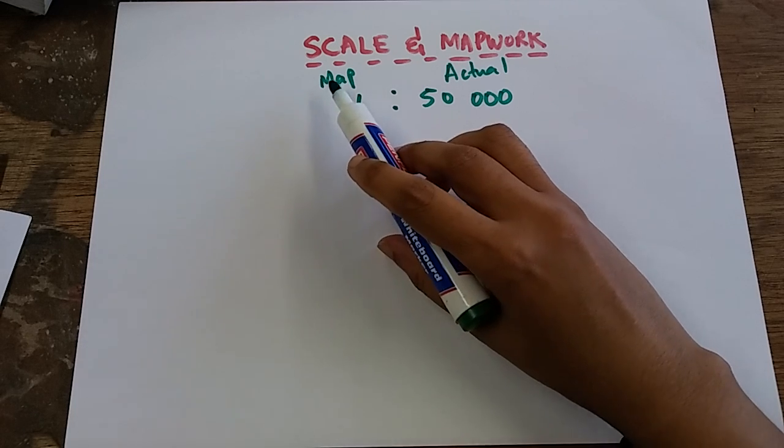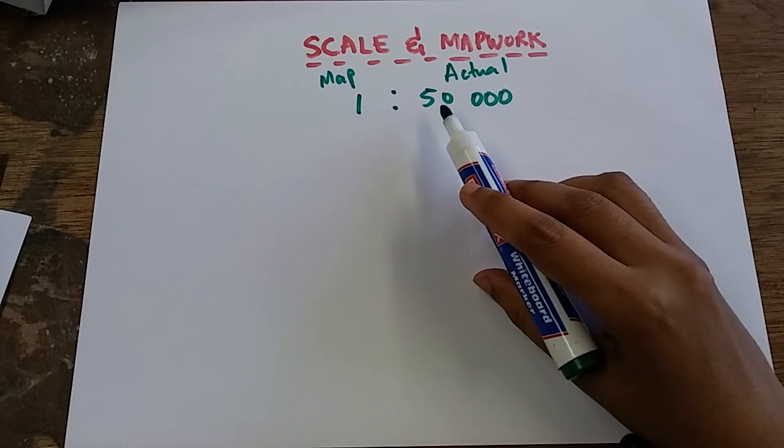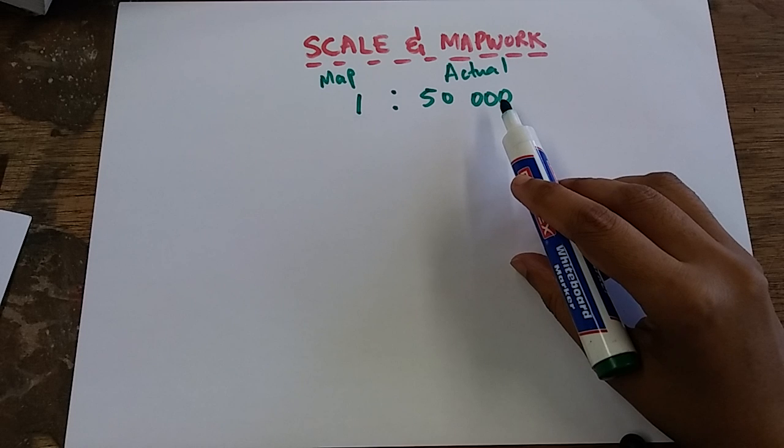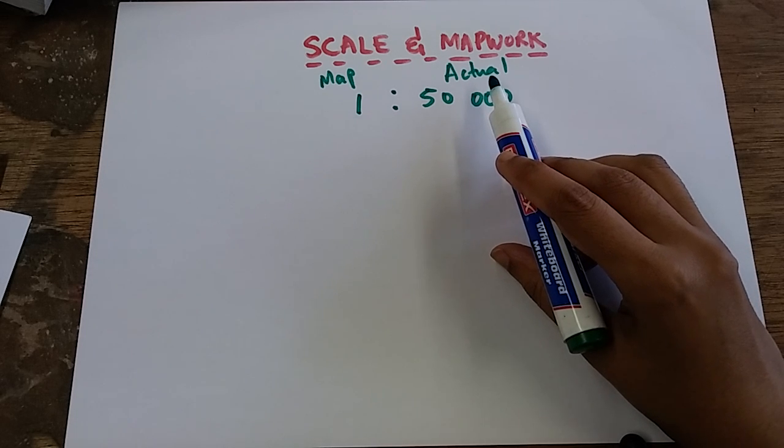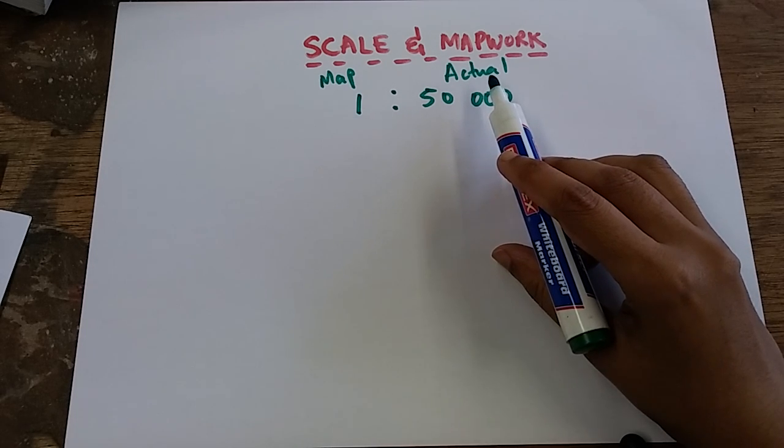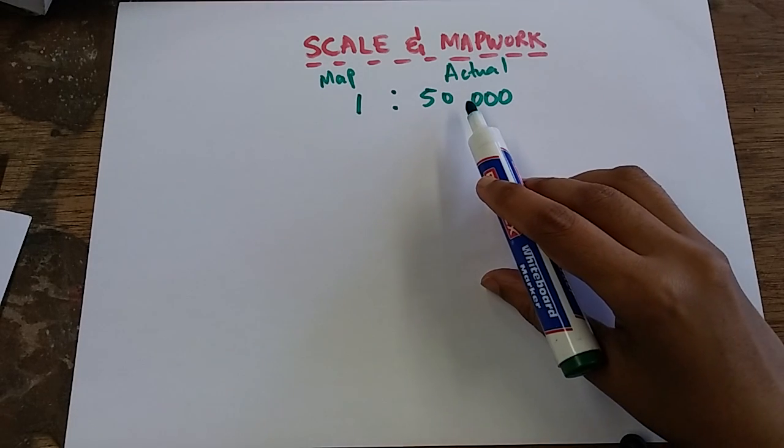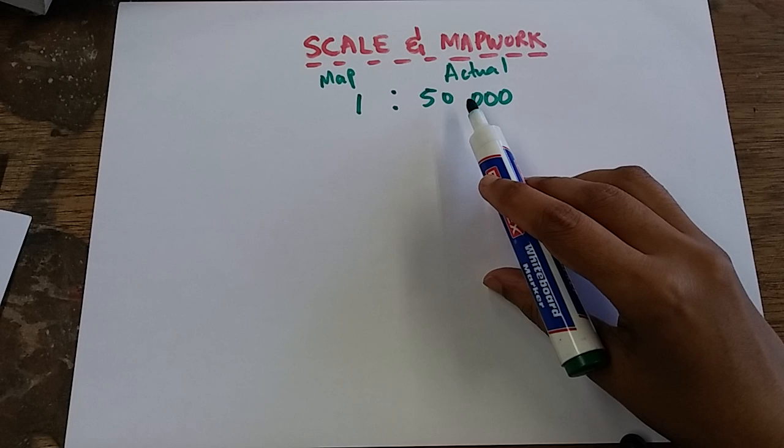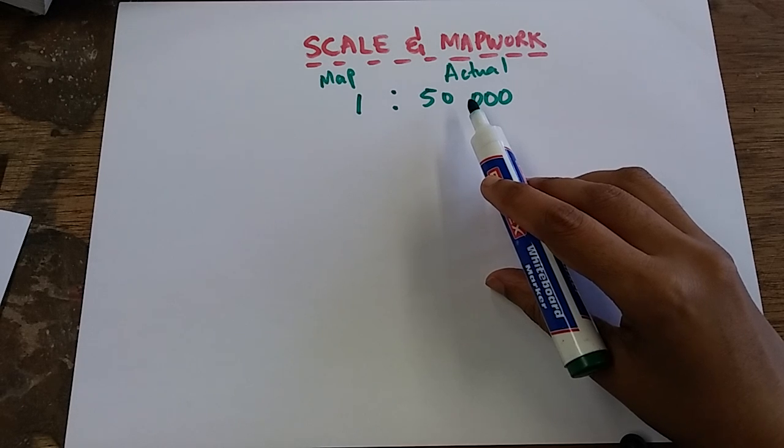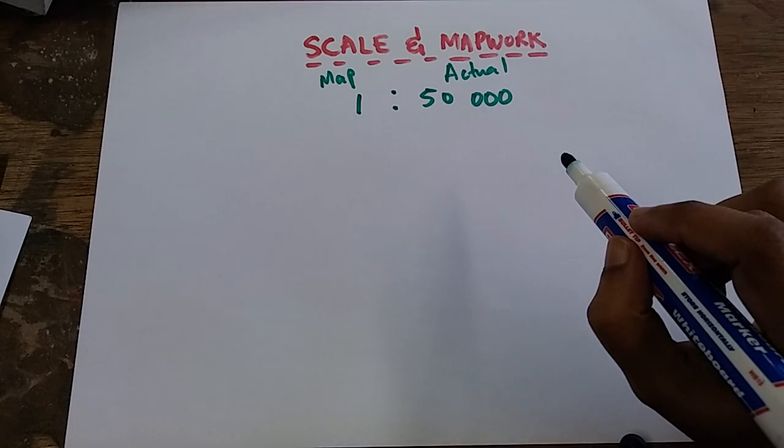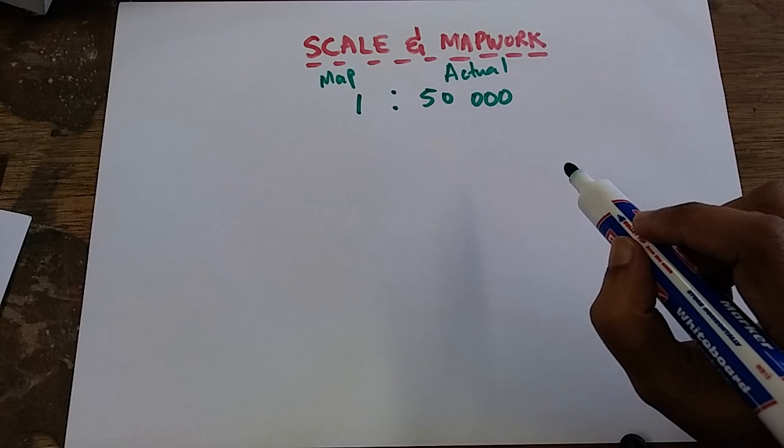So in words we will say one unit on map represents 50,000 units in actual size, or if I decide to use units, I'm going to say one centimeter on map represents 50,000 centimeters in actual size. An example would be: use the above scale to calculate the actual distance if the distance on map is 20 centimeters.